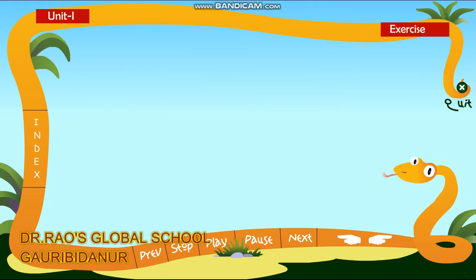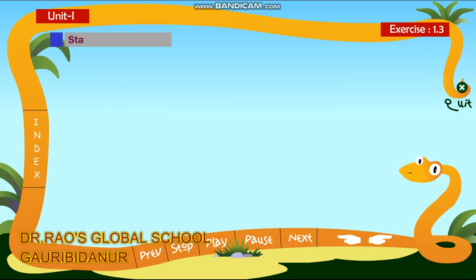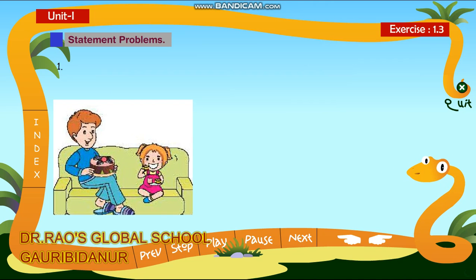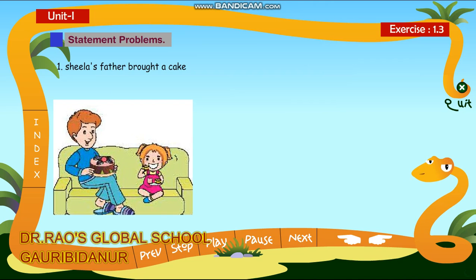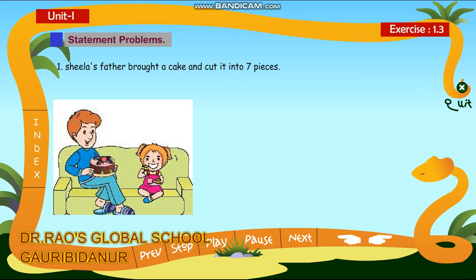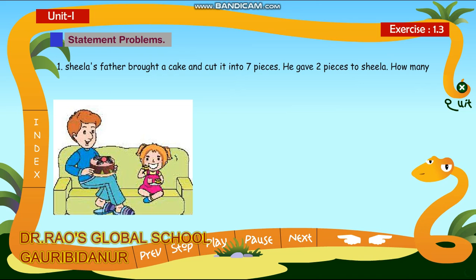Exercise 1.3 Statement Problems. 1. Sheila's father brought a cake and cut it into 7 pieces. He gave 2 pieces to Sheila. How many pieces are left over?